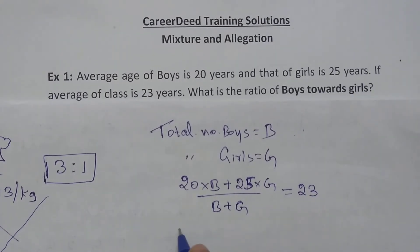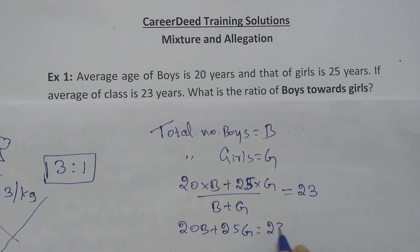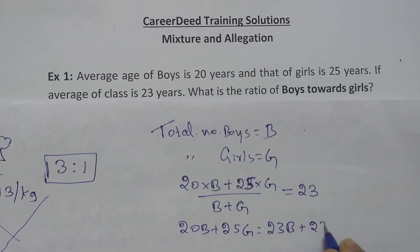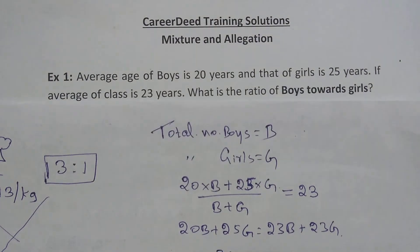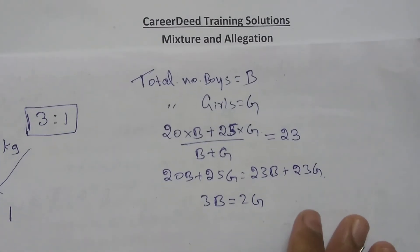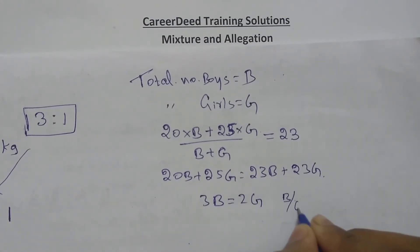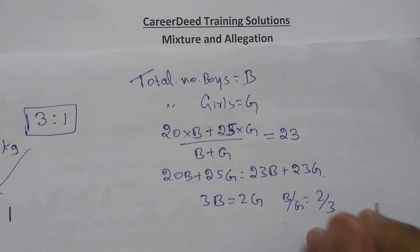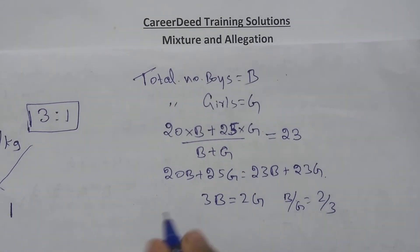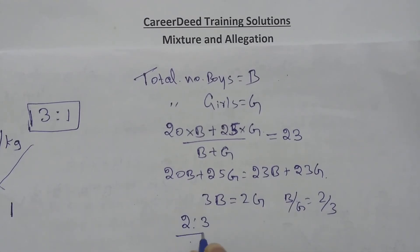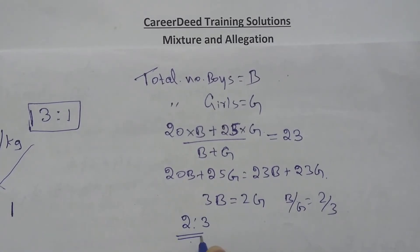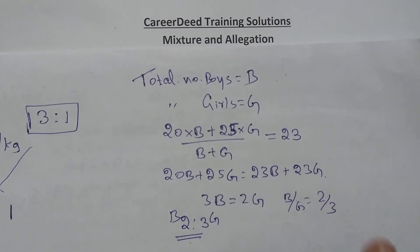Solving: 20B + 25G = 23(B + G), which gives 20B + 25G = 23B + 23G. Bringing terms across: 25G − 23G = 23B − 20B, so 2G = 3B, meaning B/G = 2/3. The ratio of boys to girls is 2 is to 3. So if there are 5 students in the class, boys will be 2 and girls will be 3. This is the traditional method of solving this problem.